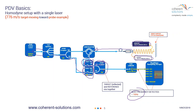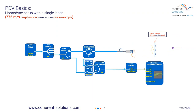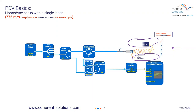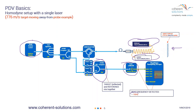Let's look at the same homodyne setup except the target is now moving in the opposite direction — away from the probe at 776 meters per second. This is the same velocity as the previous slide, except the Doppler shift will be in the opposite direction. There's the same amount of frequency shift for this 776 meters per second, except relative to the high-power laser, it's in the opposite direction. Once they mix in the 10-90 coupler and go through the ODE converter, they again create a 1 gigahertz beat frequency.